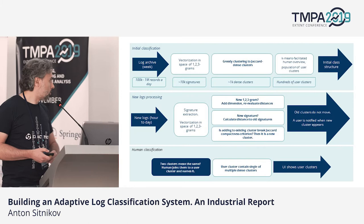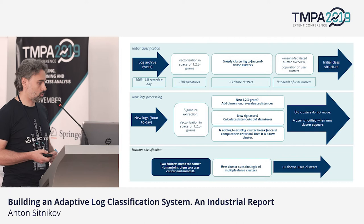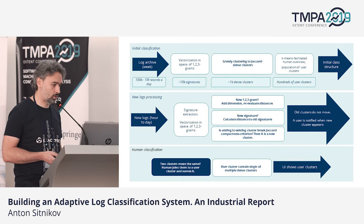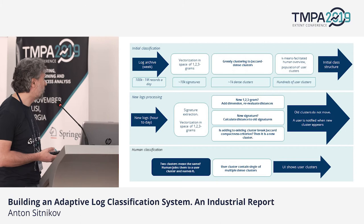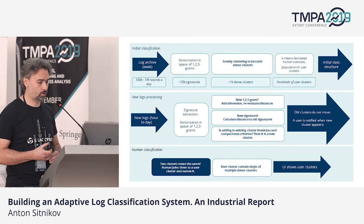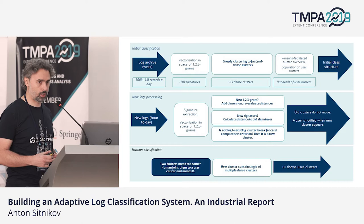Here the slide presents our algorithm as it is now. We get log files, extract signatures using regular expressions, vectorize the signatures in the space of 1-to-3-grams, then execute greedy clustering to form Jaccard-distance clusters. From this we get a set of clusters, and then we execute k-means after it to create bigger clusters. At this point we have additional information to present to co-engineers.